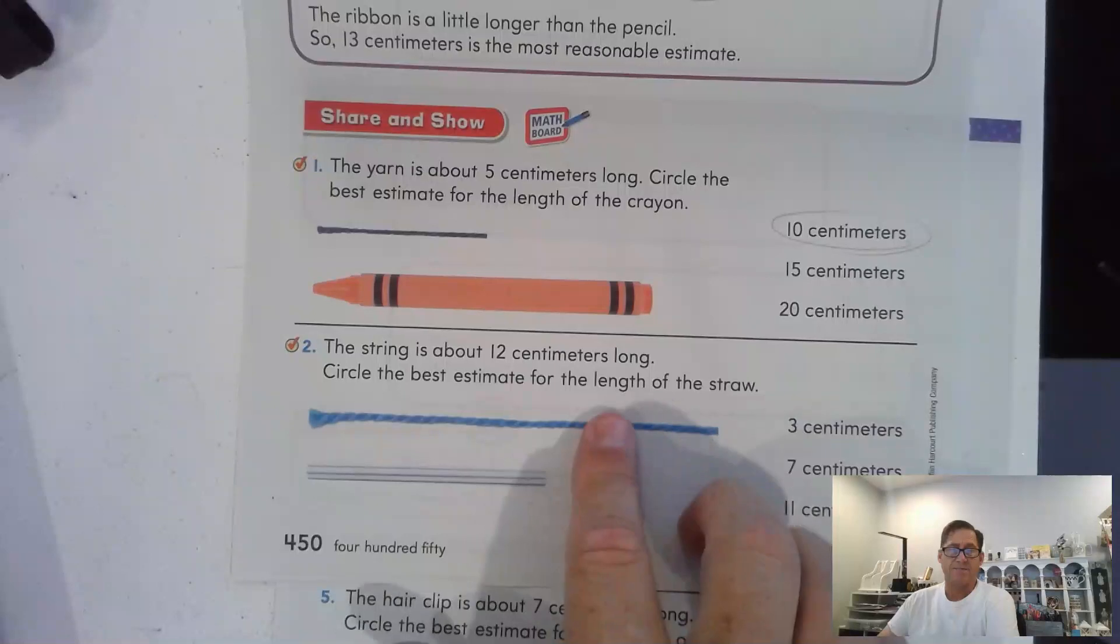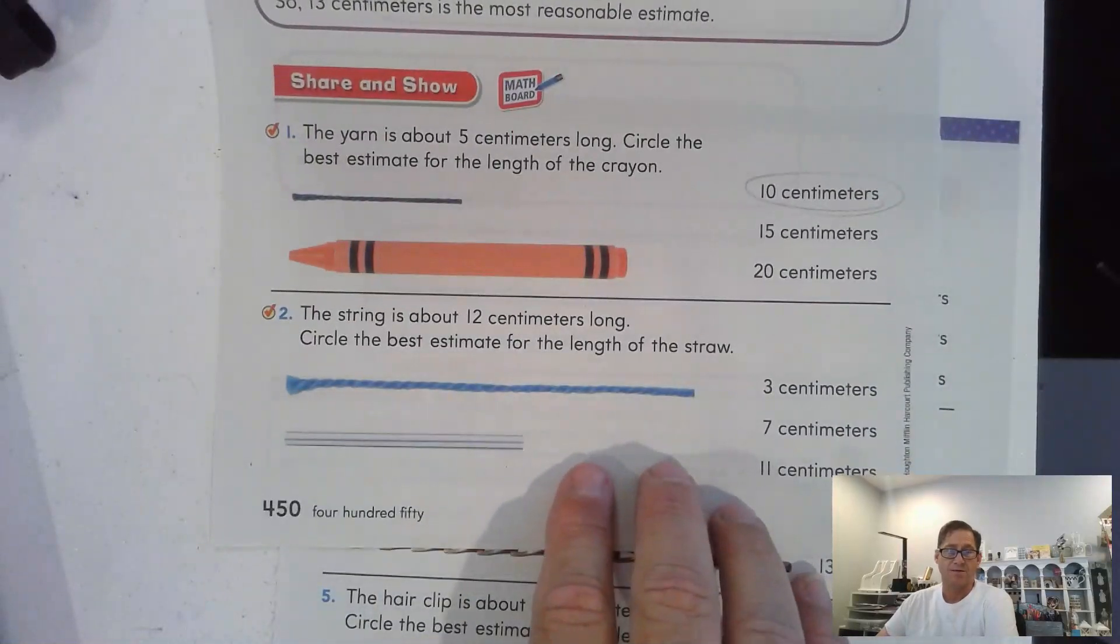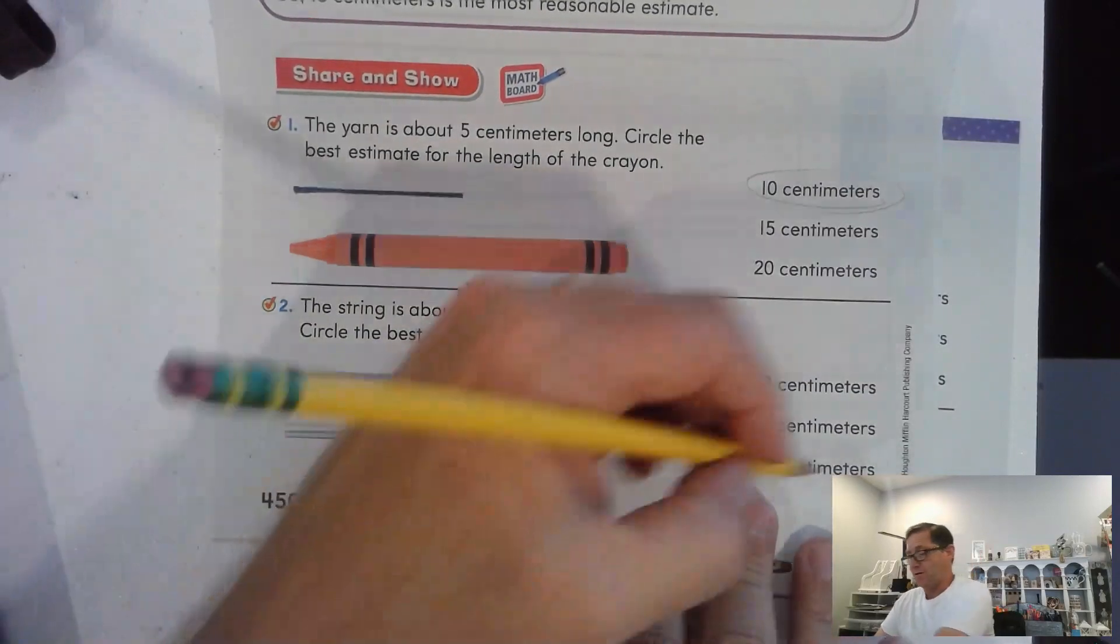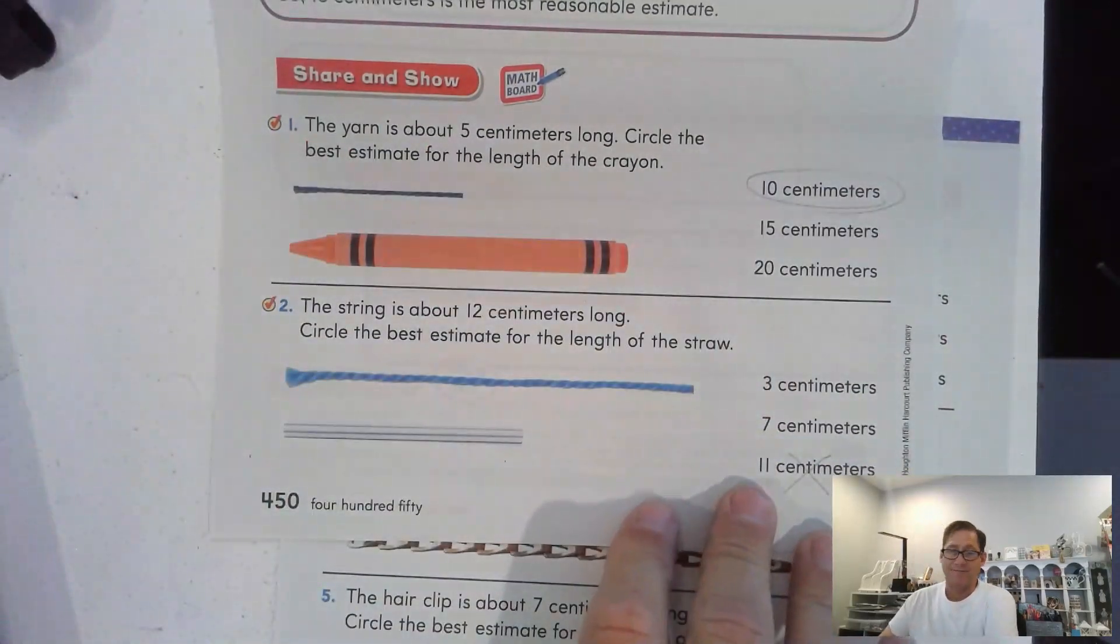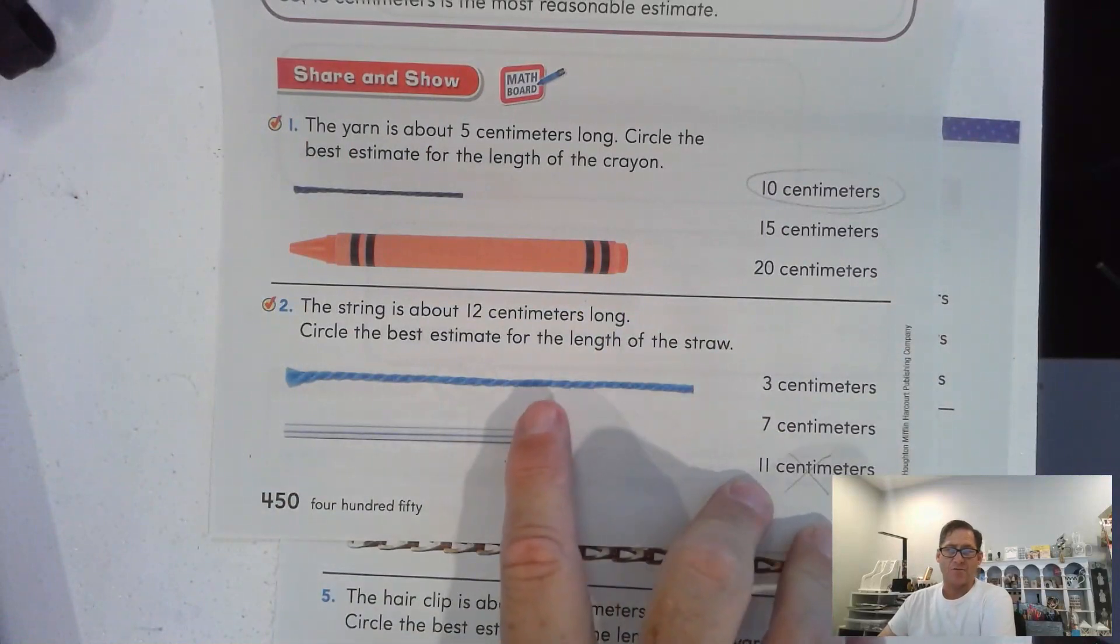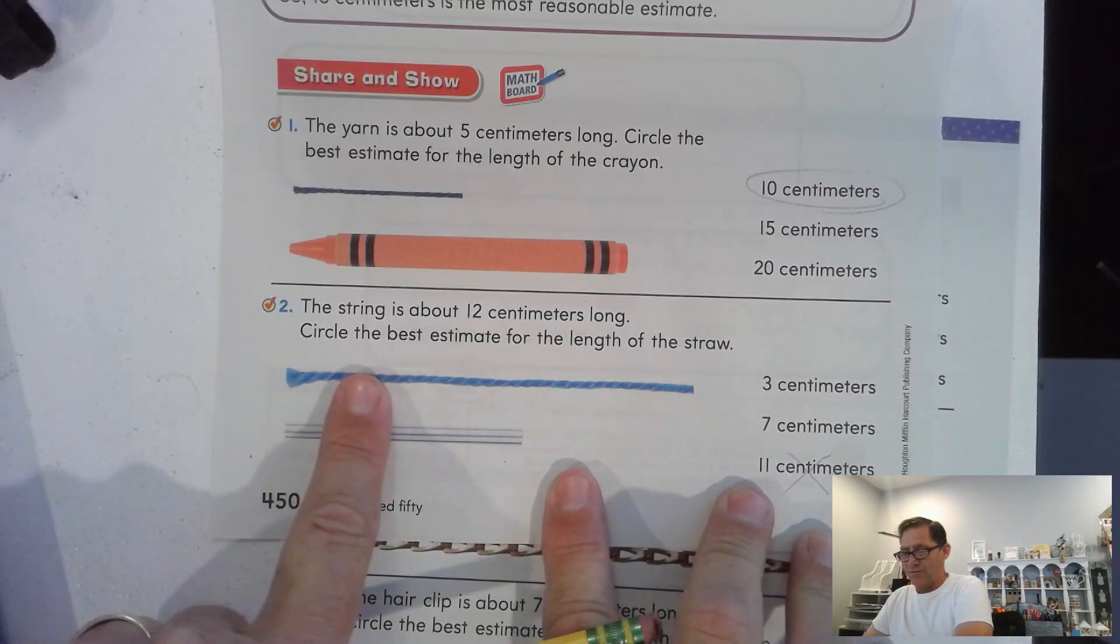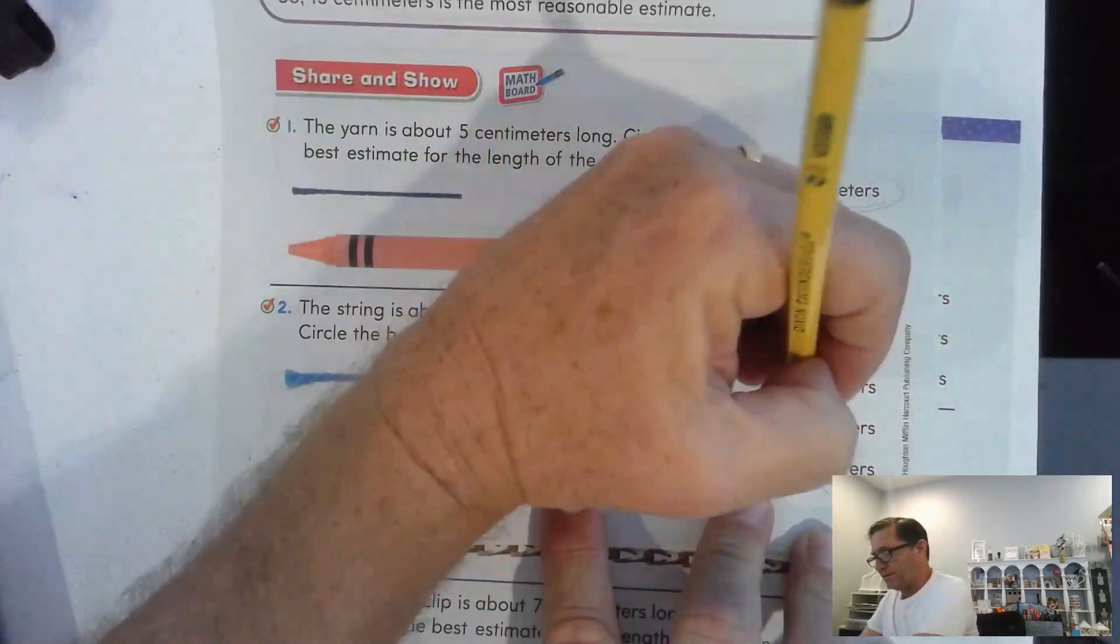Alright. This string is about 12 centimeters long. Circle the best estimate for the length of the straw. Well, we know it's not fairly short. So, it's not 11. 7 and 3, I doubt that. 3 is like 1, 2, 3. I don't think 3. I'm going to say 7.